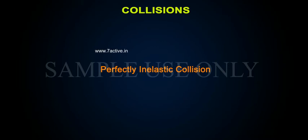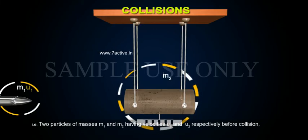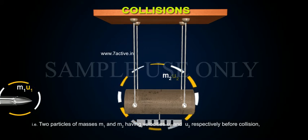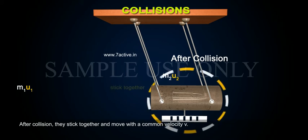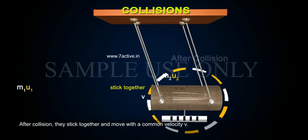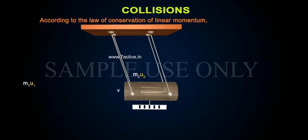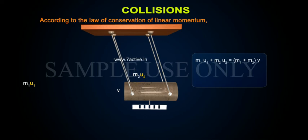Let us consider a perfectly inelastic collision. Two particles of masses m1 and m2 have velocities u1 and u2 respectively before collision. After collision, they stick together and move with a common velocity v. Then, according to the law of conservation of linear momentum: m1·u1 + m2·u2 = (m1 + m2)·v.